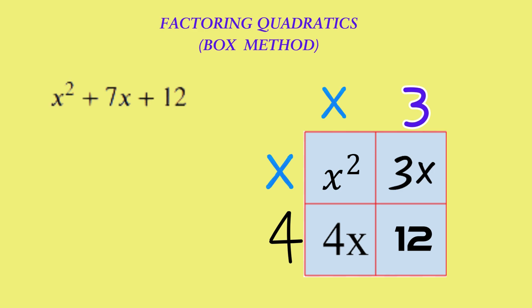Therefore, the expression fully factorized is (x + 3)(x + 4). The order of the brackets does not matter since multiplication is commutative. It's also important to note that the expression represents the area of the rectangle inside, while the factors represent the length and width of the rectangle. This shows how closely geometry is related to algebra.